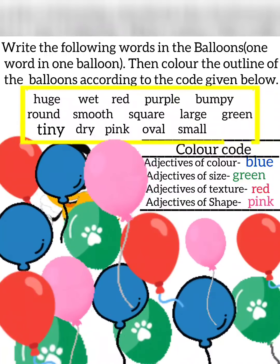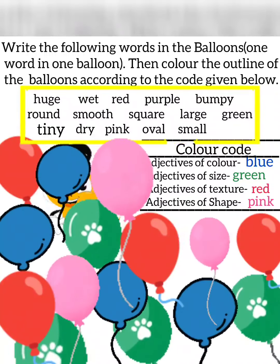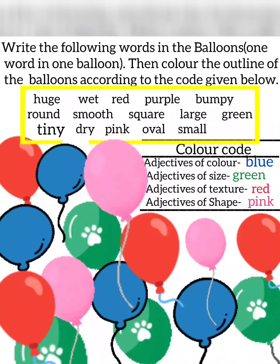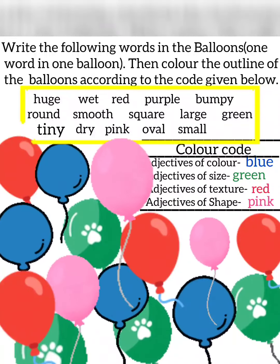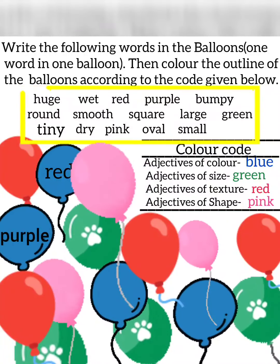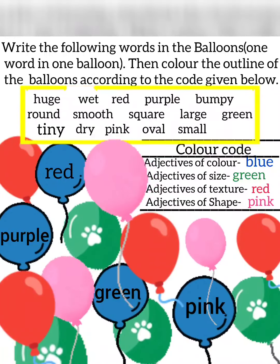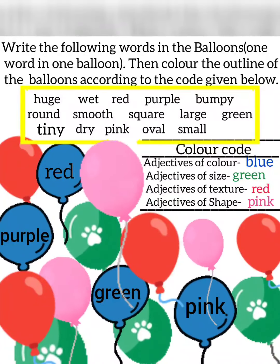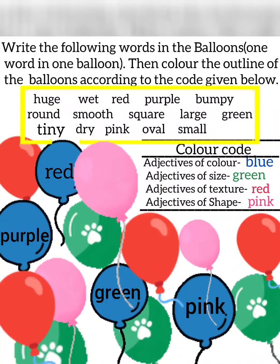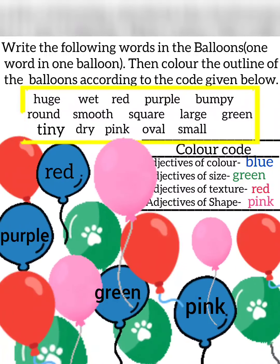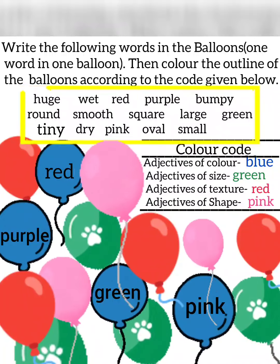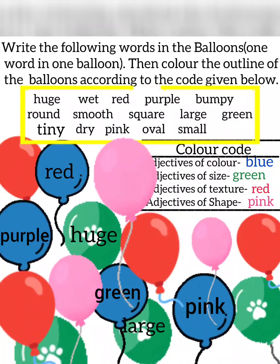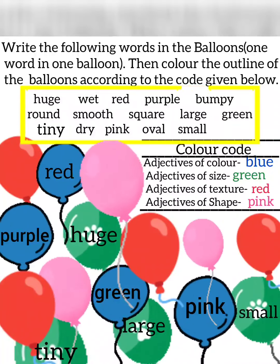These are all adjectives — adjective of color, size, texture, and shape. Let's start with adjectives of color, to be filled in the blue balloons: Red, Purple, Green, Pink — they are all adjectives of color. Now adjectives of size, to be filled in the green balloons: Huge, Large, Tiny, Small.